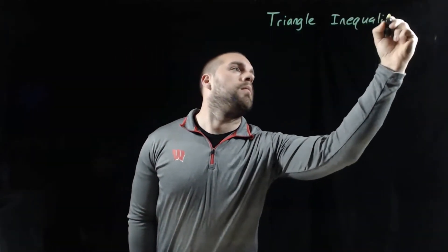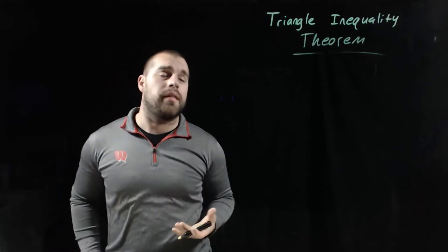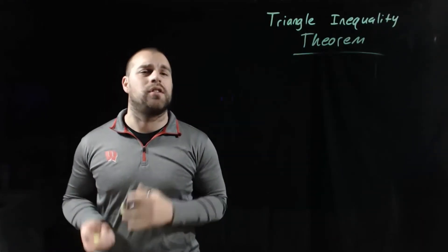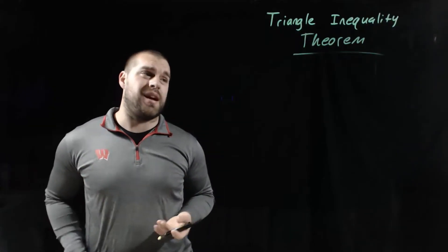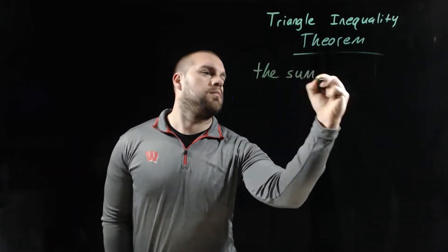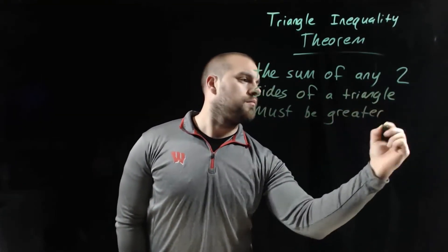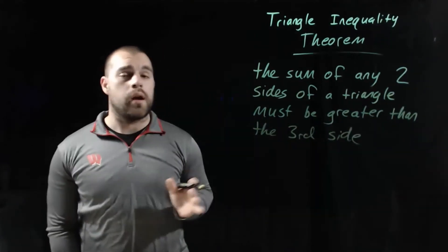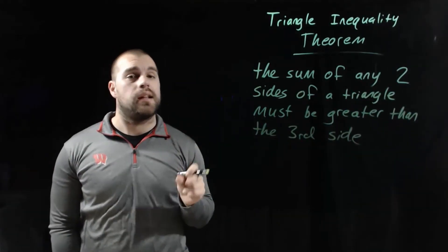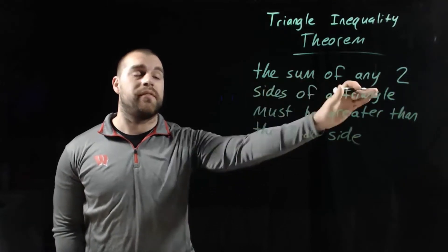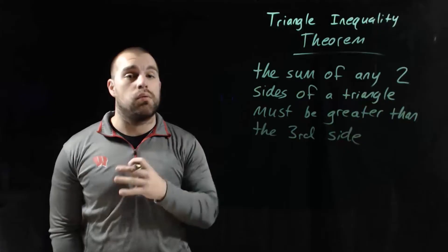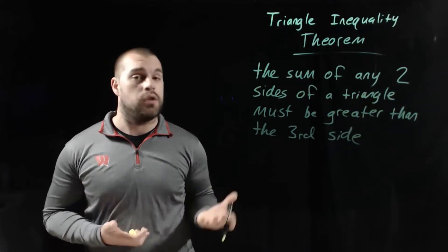Now not every group of three sides can actually make up a triangle. There's something called the triangle inequality theorem, which dictates what those three sides have to look like. The triangle inequality theorem says that if you take two side lengths of the triangle and add them together — the sum of any two side lengths — that sum has to be greater than the remaining third side.